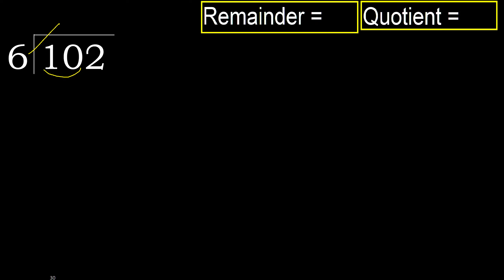6 multiplied by which number is nearest to 10 but not greater? 6 multiplied by 2 is 12, which is greater. Multiply by 1: 6 is not greater. 10 minus 6 is 4.